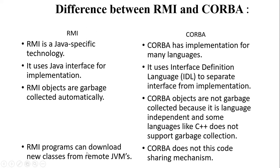RMI programs can download new classes from a remote JVM, but CORBA does not have this code-sharing mechanism. With CORBA, different vendors can communicate with each other, but they cannot share the same code-sharing mechanism that RMI uses.